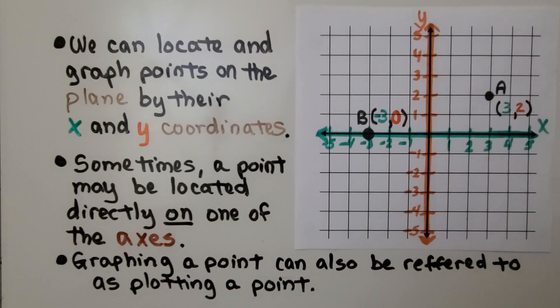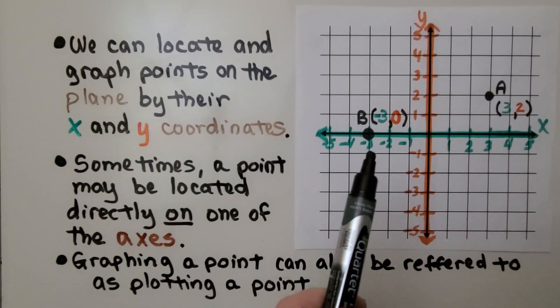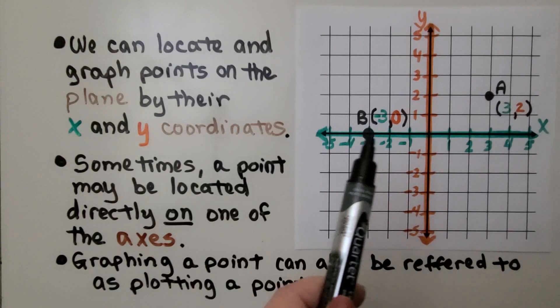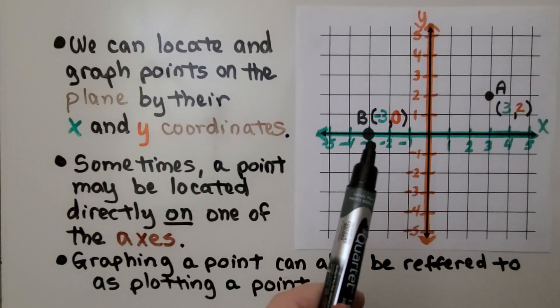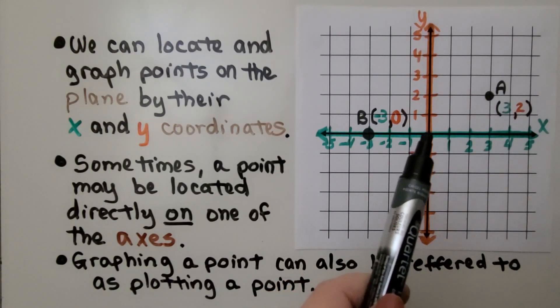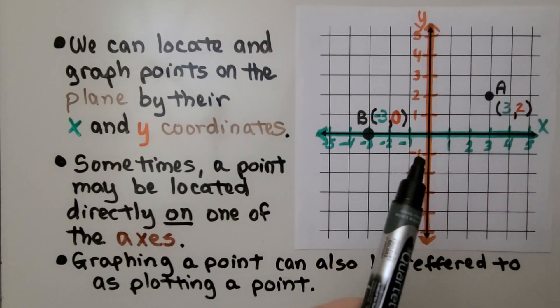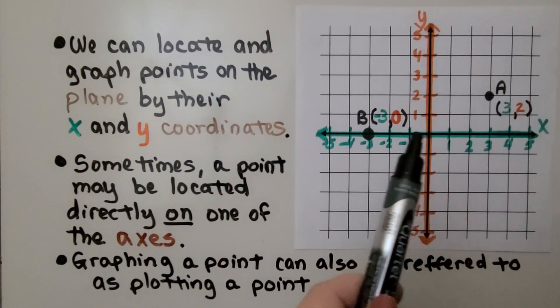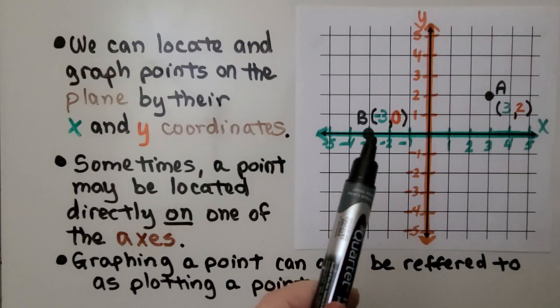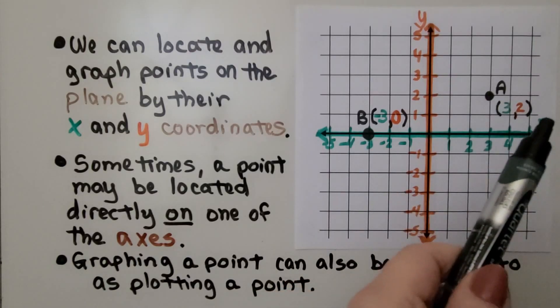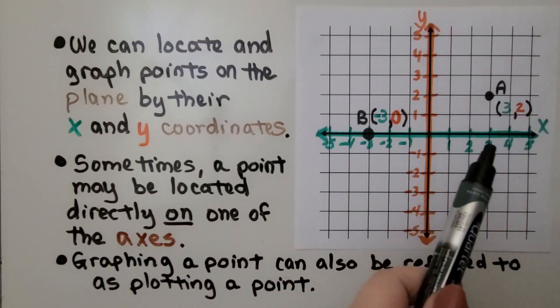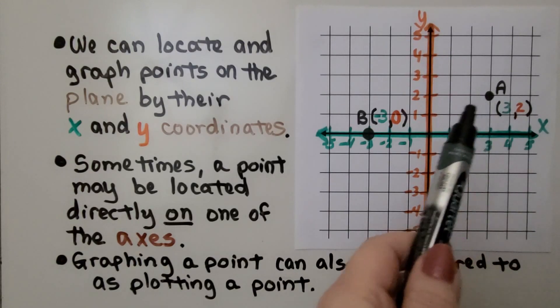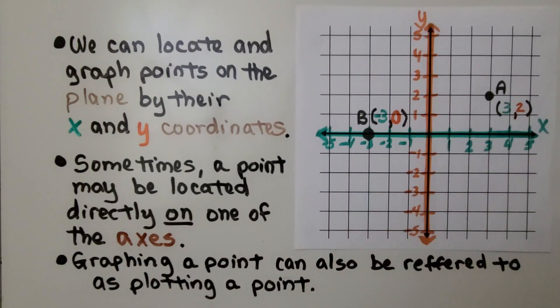We graph a point, we plot a point, so you may hear it that way. So this point is directly on the x-axis at negative three. And that would be zero for y. Here's one, here's negative one, so that's zero for y. We have negative three, zero. Where this one is at a positive three and a positive two, it's in the first quadrant.